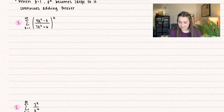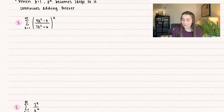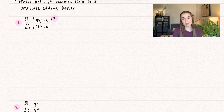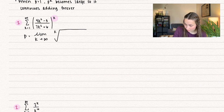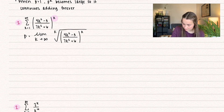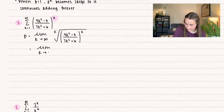Let's go ahead and see some examples. We have a summation k equals 1 to infinity of (4k squared minus 3) divided by (7k squared plus 6), all to the power of k. When you see a power of k, that's a good indicator to apply the root test. So we take the limit as k approaches infinity of the kth root of that expression. The purpose is that the power of k cancels out, leaving us with (4k squared minus 3) divided by (7k squared plus 6).